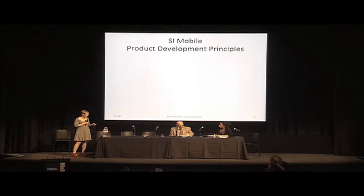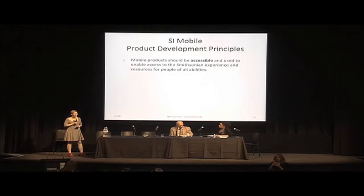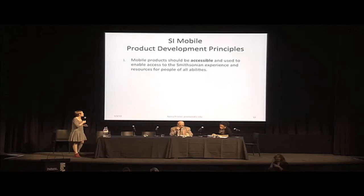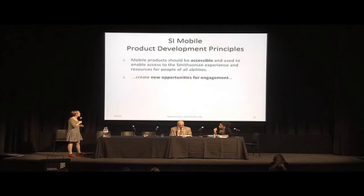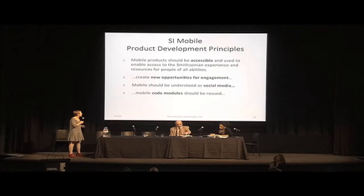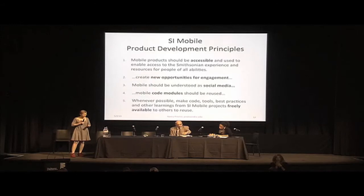Our number one mobile product development principle is that good mobile products are accessible. They should be used to enable access to the Smithsonian's experiences and resources for people of all abilities — not just to fulfill legal requirements, but because our experience is that when a product is designed for universal access, it's simply a better product for everybody.